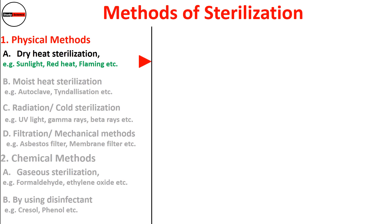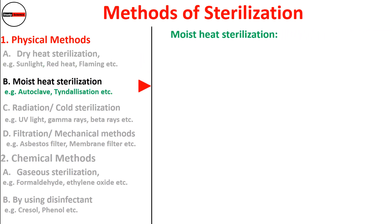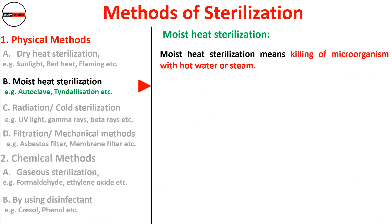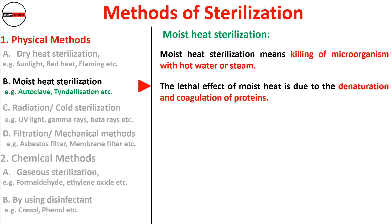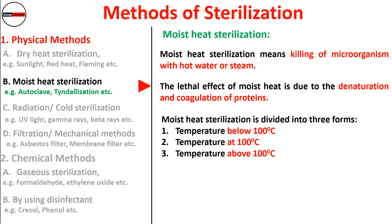Moist heat sterilization means killing of microorganisms with hot water or steam. The lethal effect of moist heat is due to the denaturation and coagulation of proteins. Moist sterilization is divided into three forms: temperature below 100°C, temperature at 100°C, and temperature above 100°C.